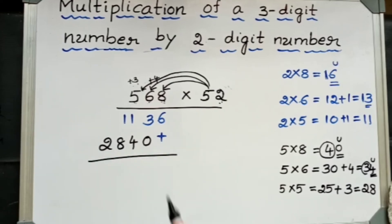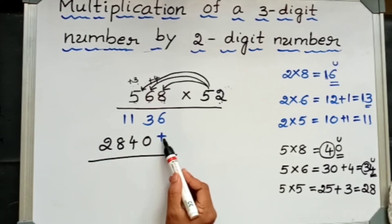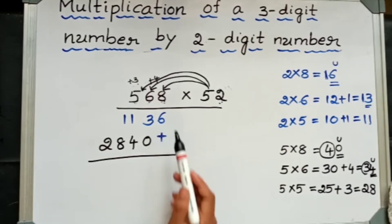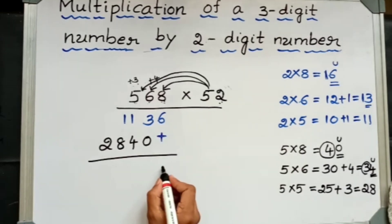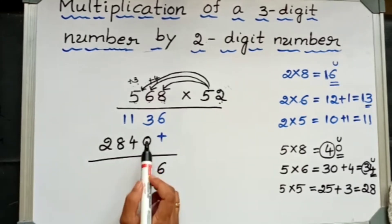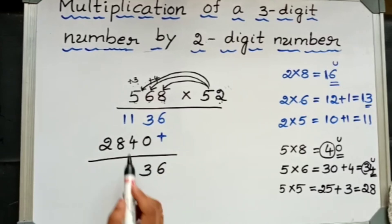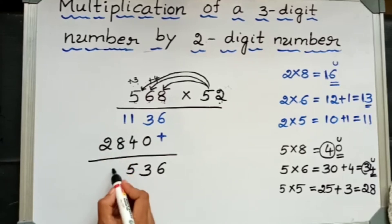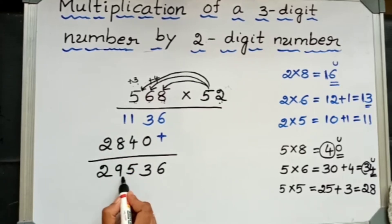Here I have written the addition symbol, means we have to add. 3 plus 0 is 3, 1 plus 4 is 5, 1 plus 8 is 9, and this 2. The answer is 29,536.